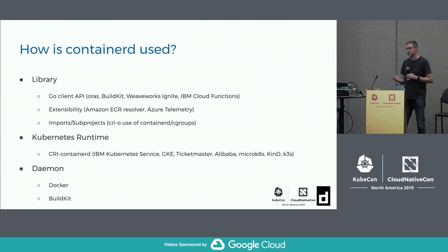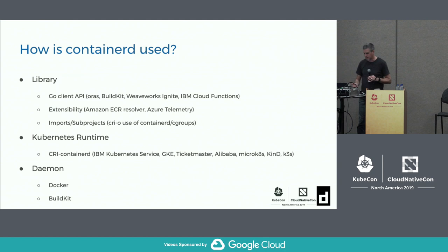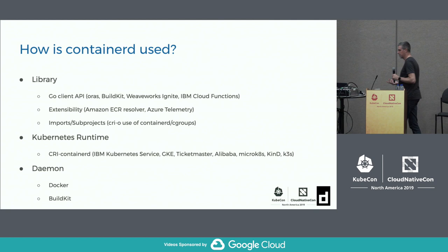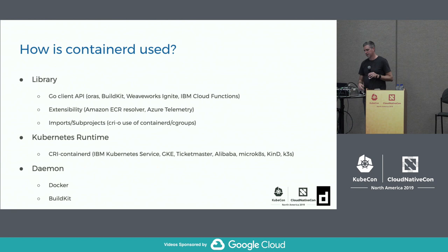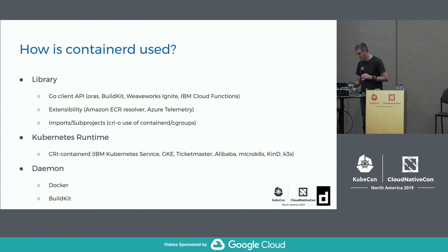Container D is used as a Kubernetes CRI runtime by IBM IKS, GKE, Ticketmaster, Alibaba Cloud, MicroK8s, Kind, and K3S. In the non-Kubernetes use case, you can also simply use the daemon — Docker relies on Container D's gRPC APIs as a running daemon, and BuildKit can similarly point at a running Container D daemon. Those are the general different ways that Container D is used.